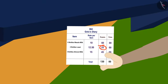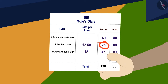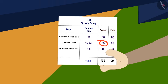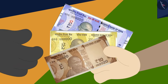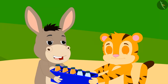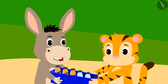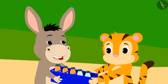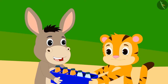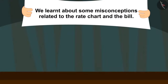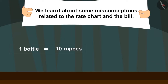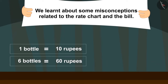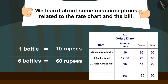Bhoala also found the mistake in Golu's receipt, just like you did, and gave him 130 rupees. Now Sher Khan and Bhoala went to meet their friends with the bottles they bought. In this video, we saw some misconceptions related to the rate chart and the bill. Thank you.